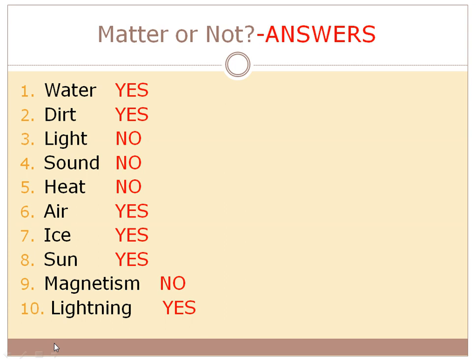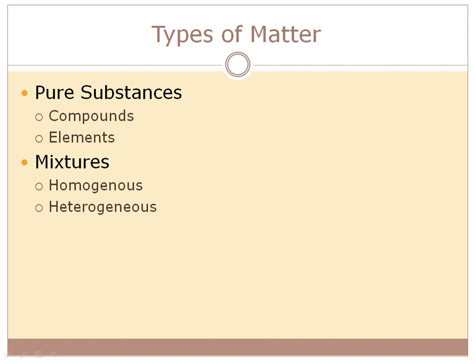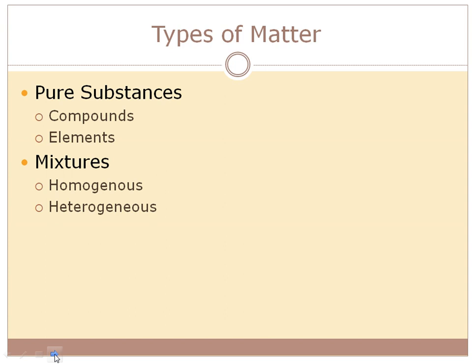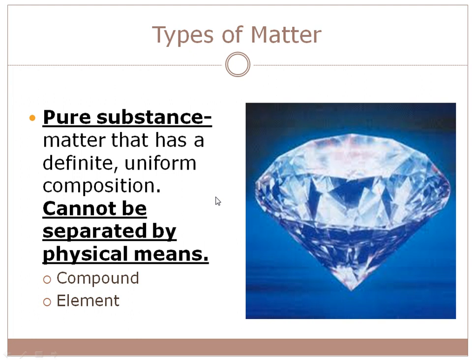Matter can be broken into two major groups: pure substances or mixtures. Under each group we have subgroups — compounds and elements are substances, and mixtures have two types: homogeneous and heterogeneous. A pure substance is matter that has a uniform, definite composition. 'Pure substance' and 'substance' are the same thing — don't think one is more pure than the other. The key to a substance is it cannot be separated by physical means.